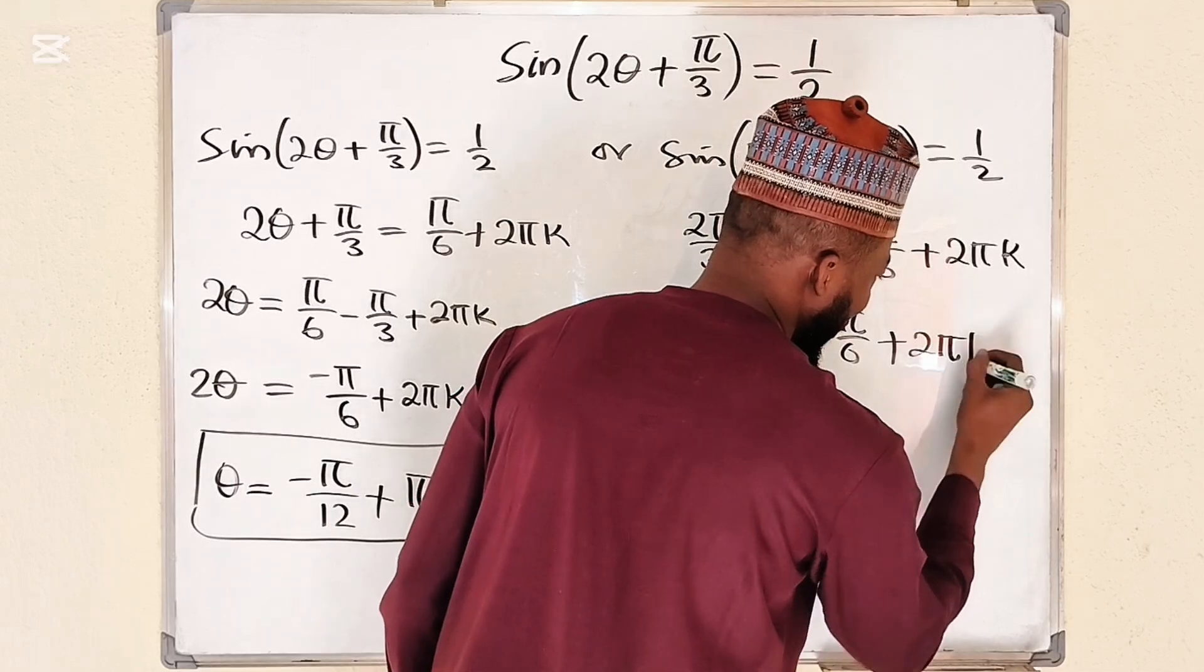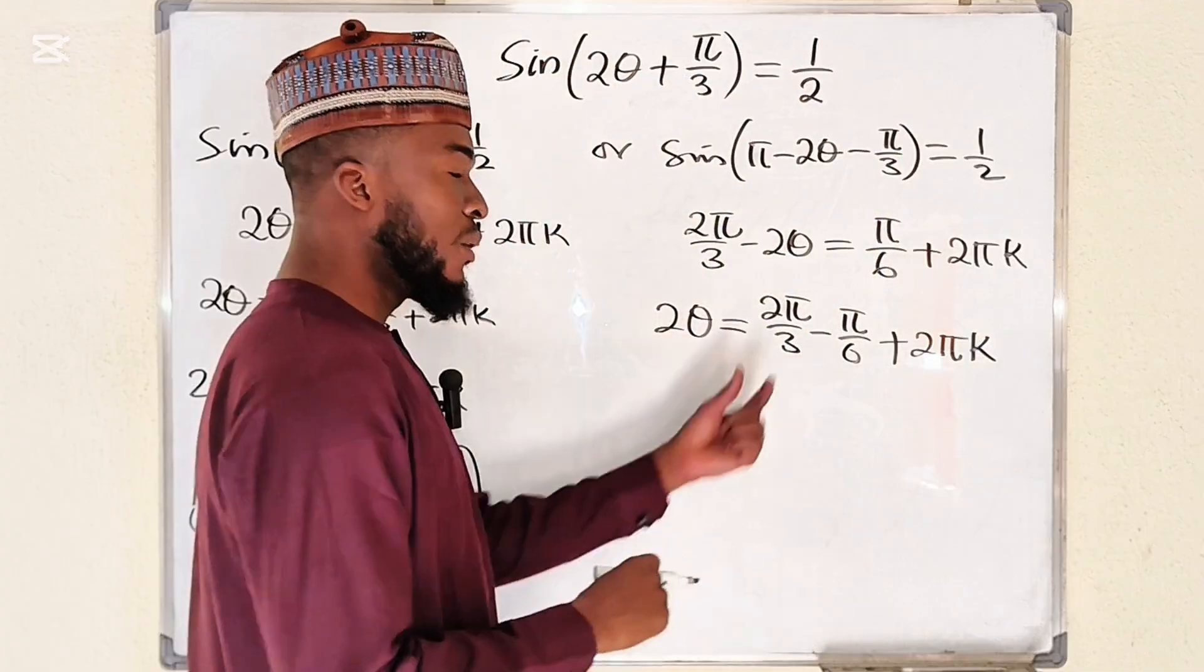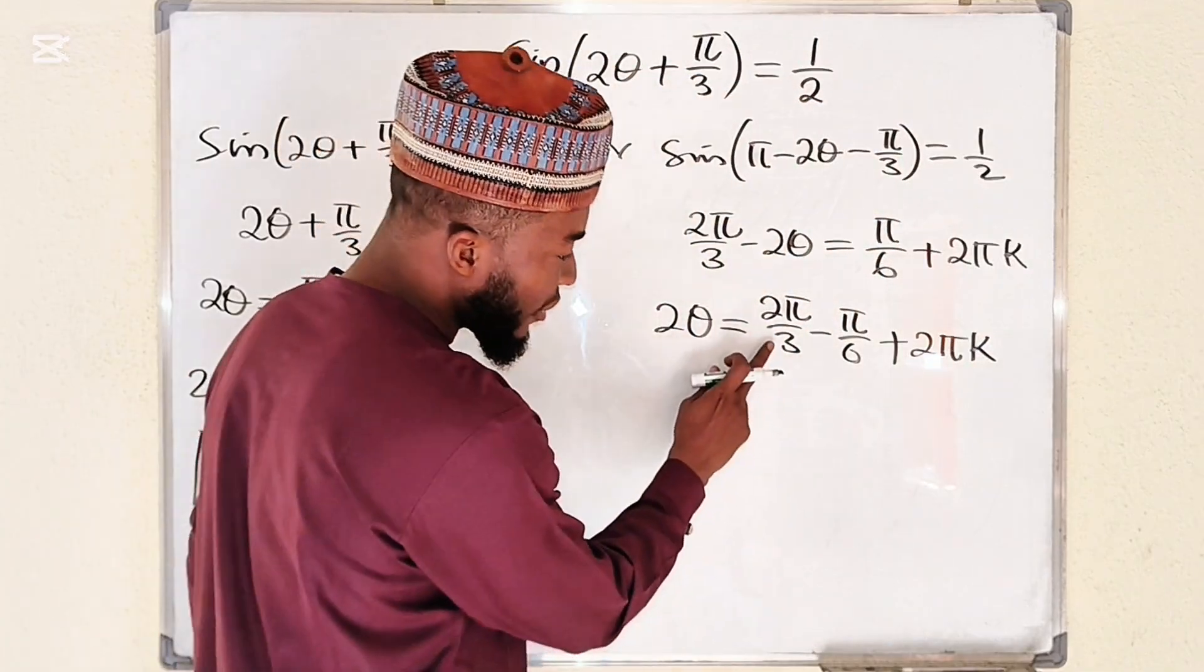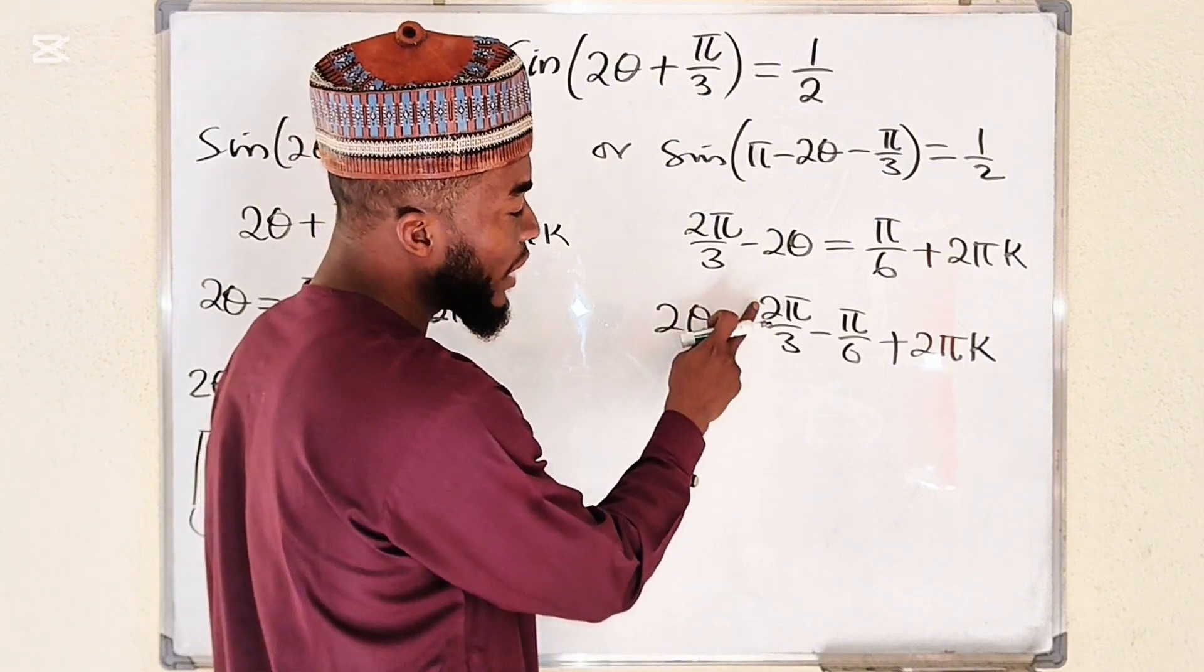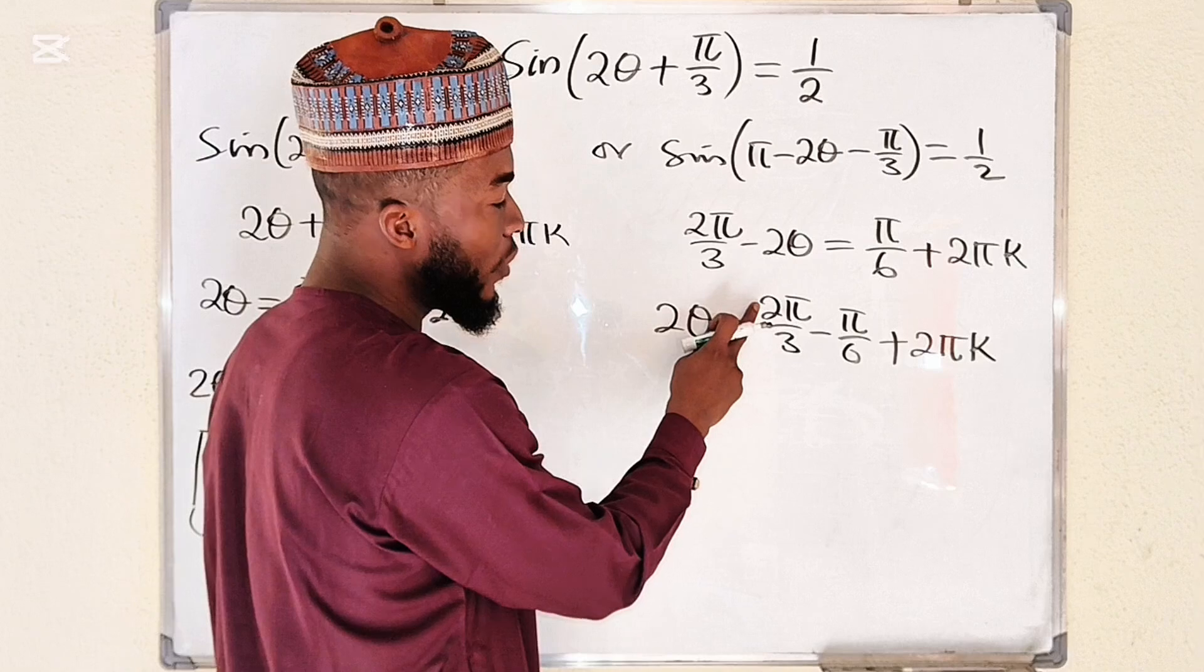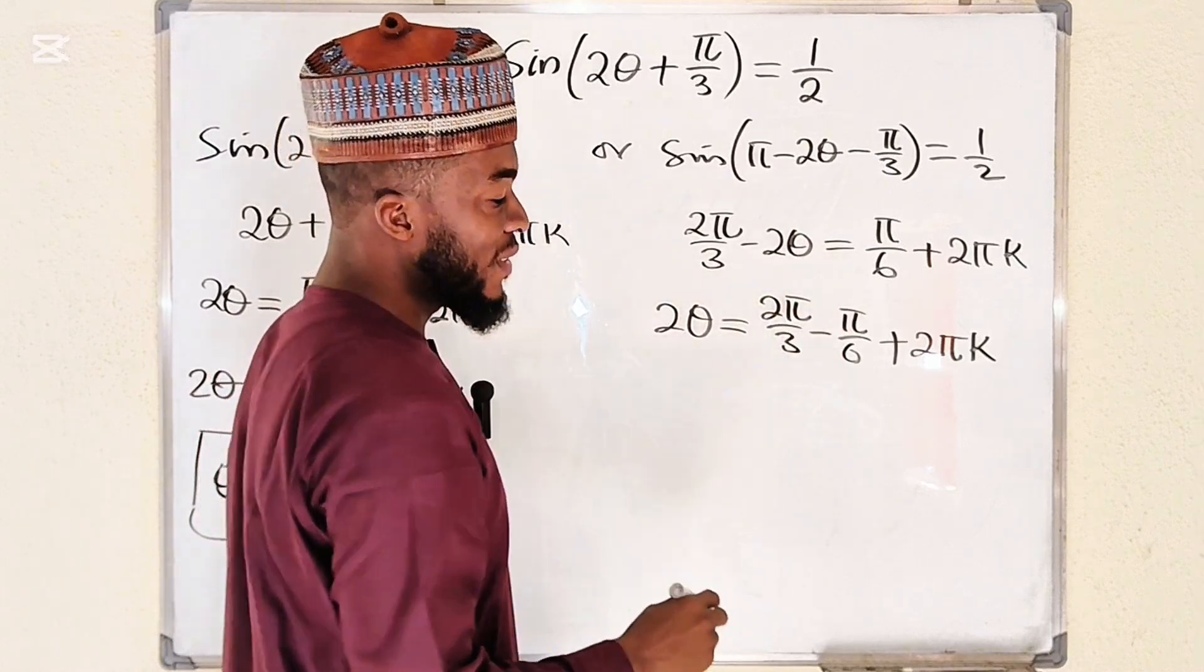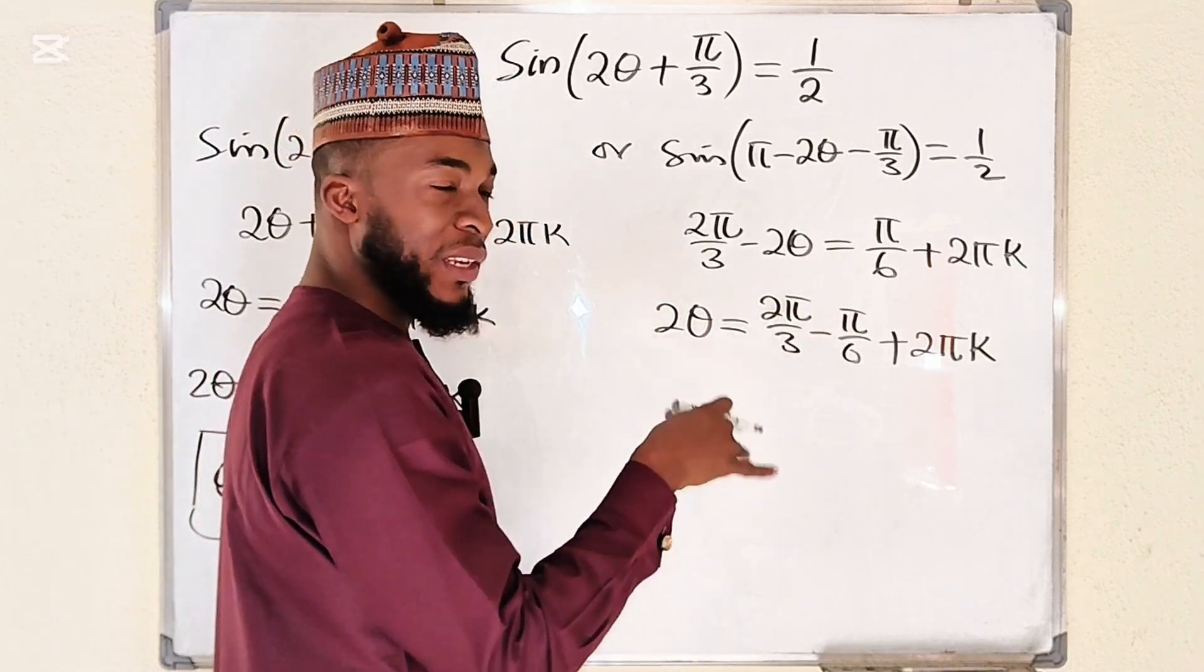To simplify this we can make this one equal to 6 by multiplying the top and bottom by 2. So as you multiply this by 2 it becomes 4, and 4 minus 1 is 3, so we have 3 pi divided by 6 plus 2 pi k, and this remains 2 theta.